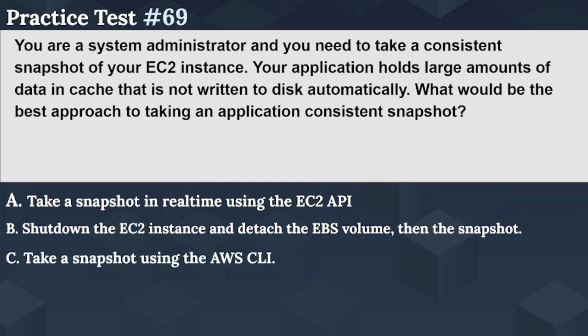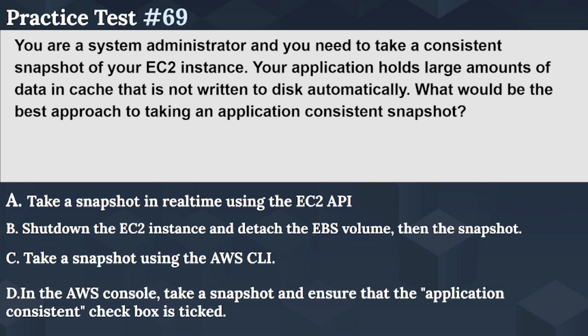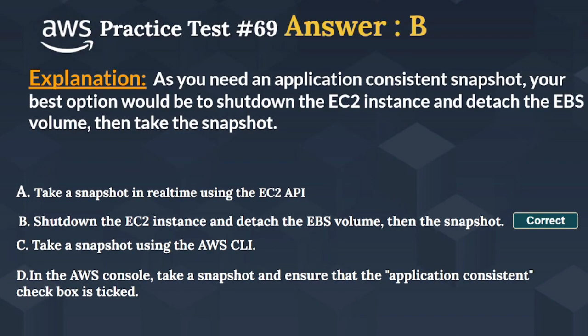Option C: take a snapshot using the AWS CLI. Option D: in the AWS console, take a snapshot and ensure that the application-consistent checkbox is ticked. The right answer is Option B — shut down the EC2 instance and detach the EBS volume, then take the snapshot. As you need an application-consistent snapshot, your best option is to shut down the EC2 instance and detach the EBS volume, then take the snapshot.